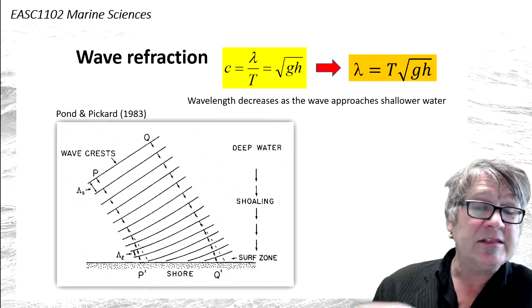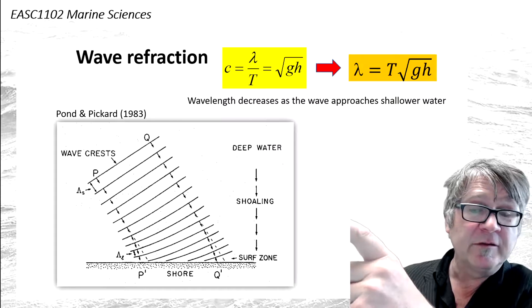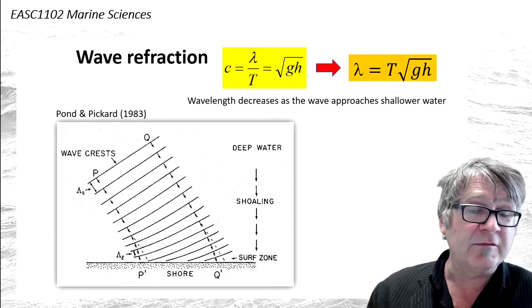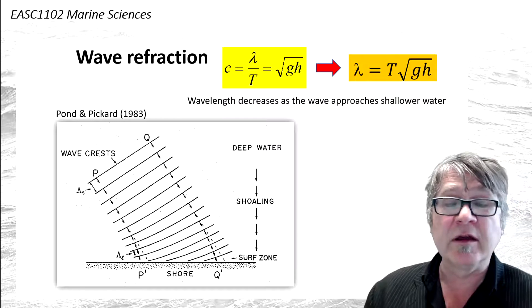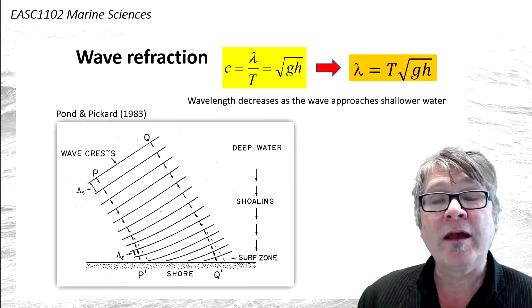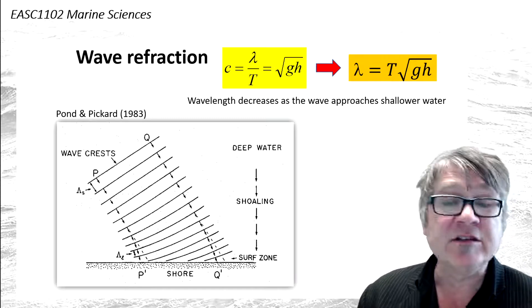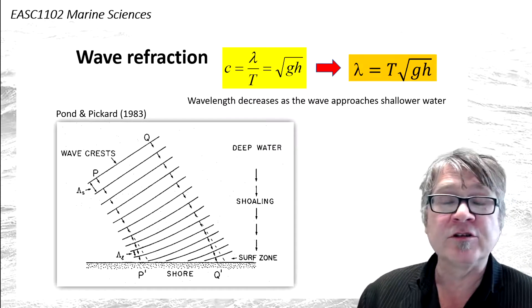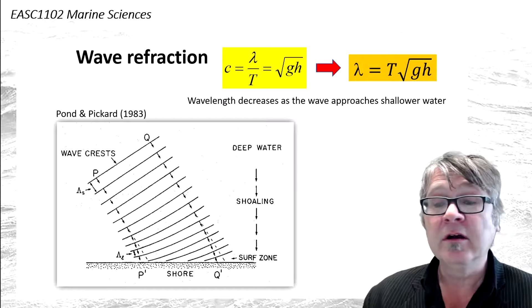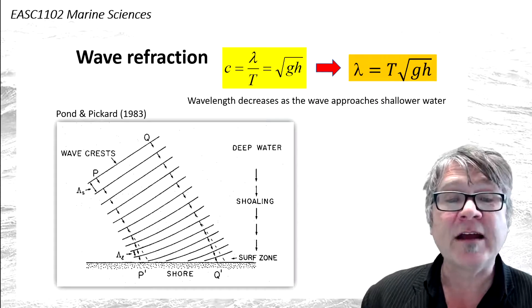If you follow the wave crests and imagine the wavelength becoming shorter, this implies that the orientation of the wave crest changes as the wave approaches the shore and turns parallel to it. This is what we call wave refraction.